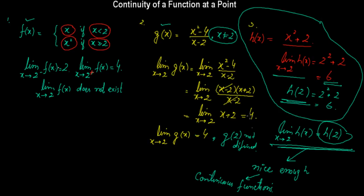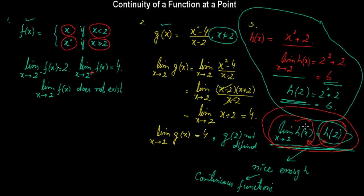We can now define what we mean by continuity of a function at a point. Note that for continuity at a point, two things are necessary: first, the limit of the function at that point should exist, and second, the function must be defined at that point, and these two must be equal. When we talk of the limit, the function must be defined in a deleted neighborhood of the point. For continuity, the function must also be defined exactly at that point — combining both conditions, the function must be defined in the full neighborhood including the point itself.